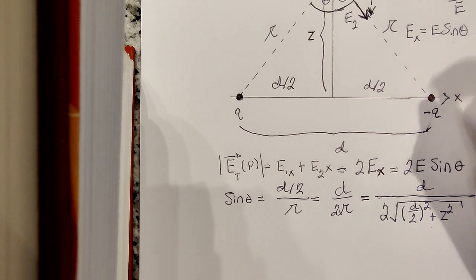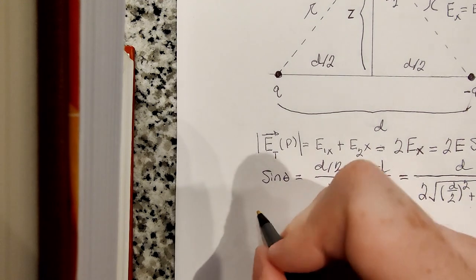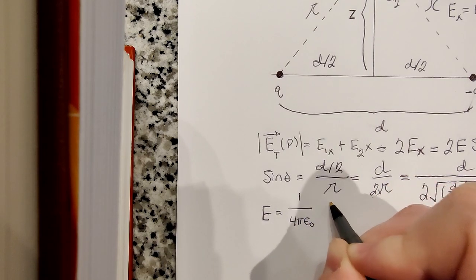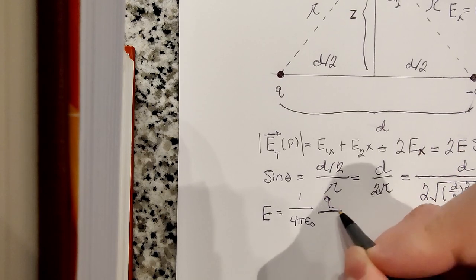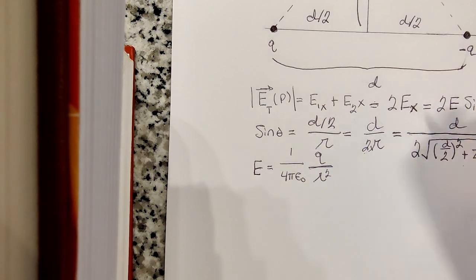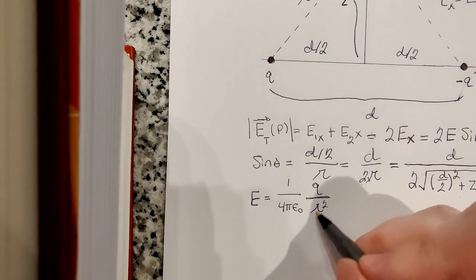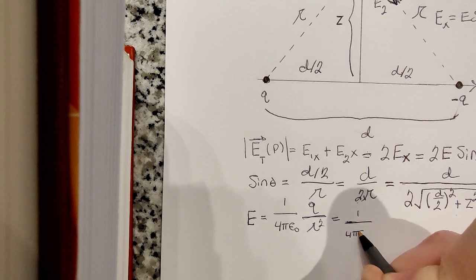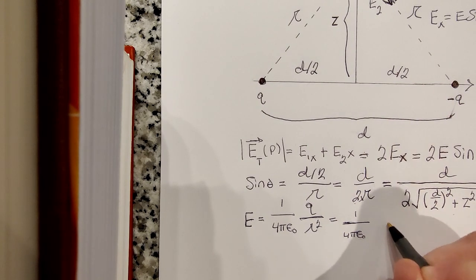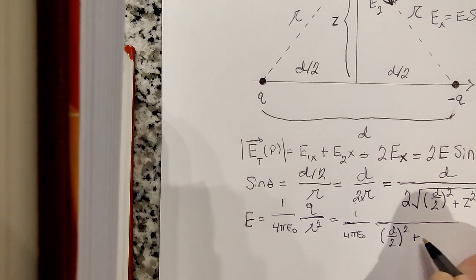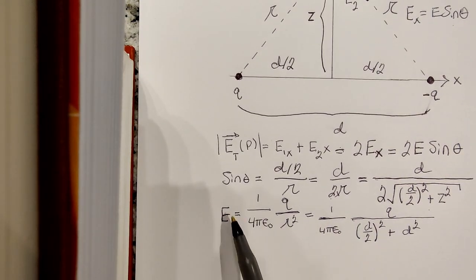And what is E? So E is just the magnitude of the electric field of one of the charges. And we know that the magnitude of the electric field of a point charge is 1 over 4 pi epsilon naught, the magnitude of the charge, which is just going to be Q, over the distance between the charge and the point in space squared. So that's going to be script R squared. And given that we know what script R squared is, this is going to be 1 over 4 pi epsilon naught, Q on top, over d over 2 squared plus z squared.